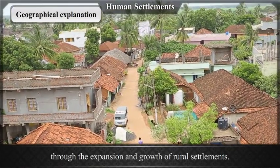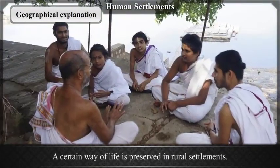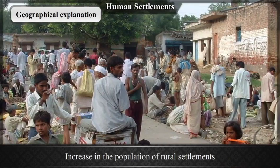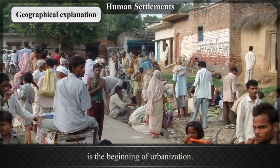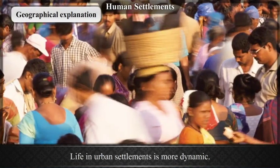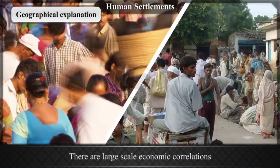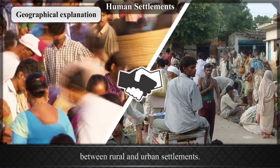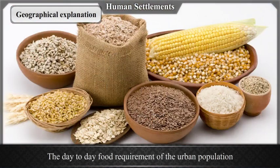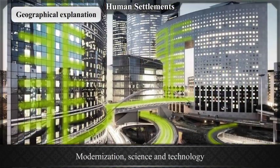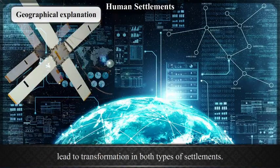Rural settlement is the first step towards a stable life in human history. Urban settlements have evolved through the expansion and growth of rural settlements. A certain way of life is preserved in rural settlements. There are large-scale economic correlations between rural and urban settlements; the day-to-day food requirements of the urban population are fulfilled by rural settlements.